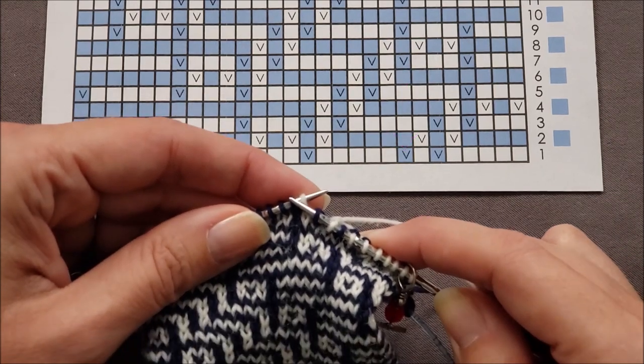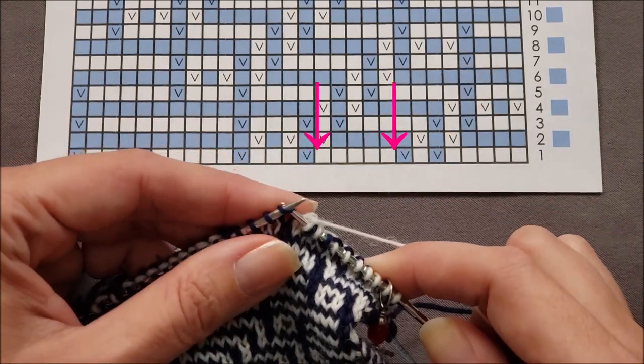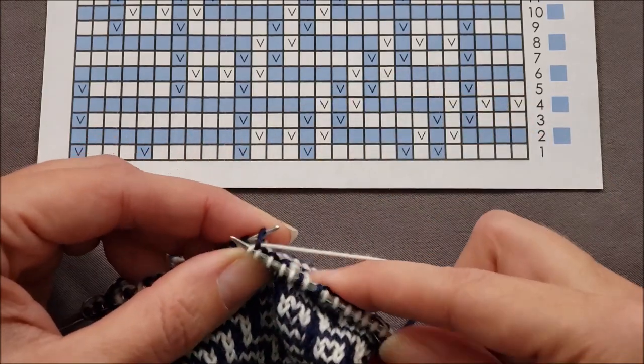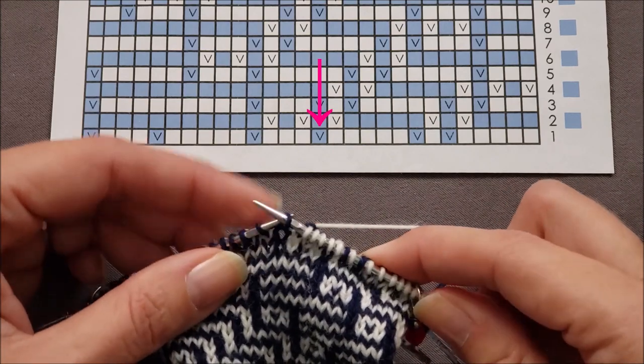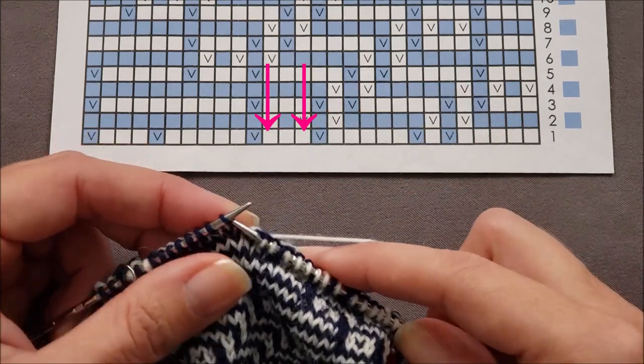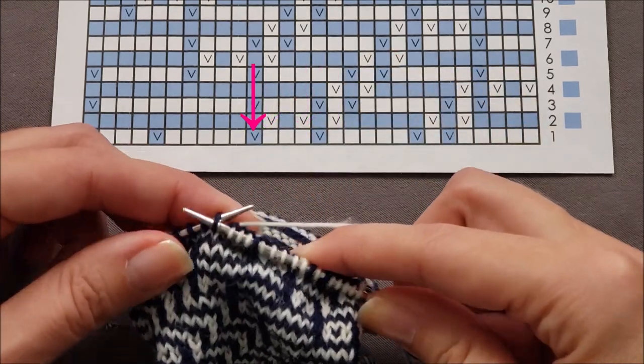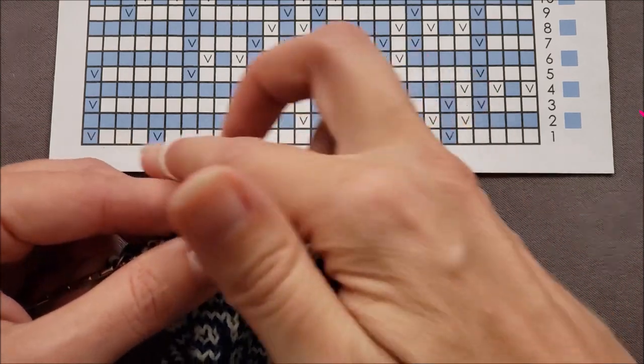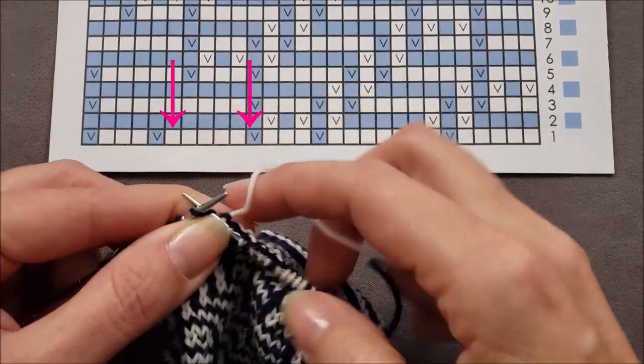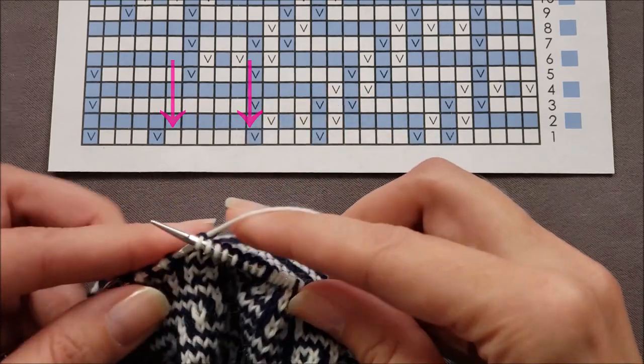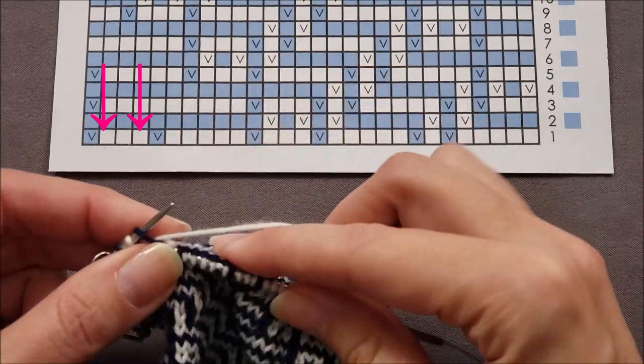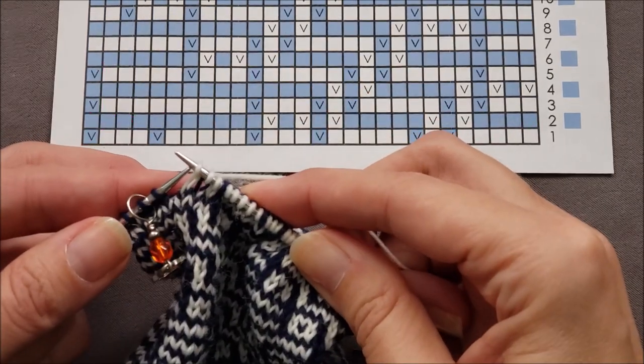Knit across five stitches in white and then slip a blue stitch. Knit three stitches. Slip a blue stitch. Knit five stitches. Slip a blue stitch. Knit three stitches. And then slip a blue stitch.